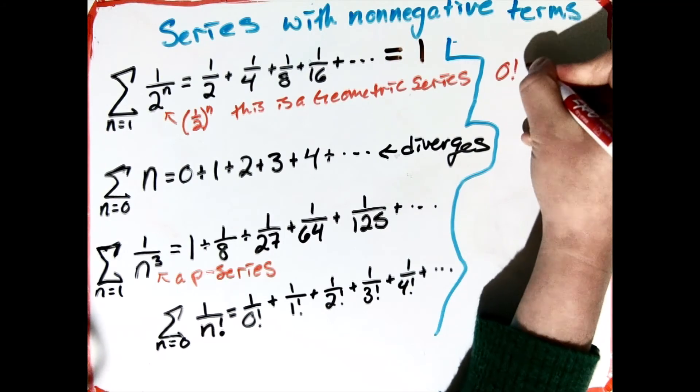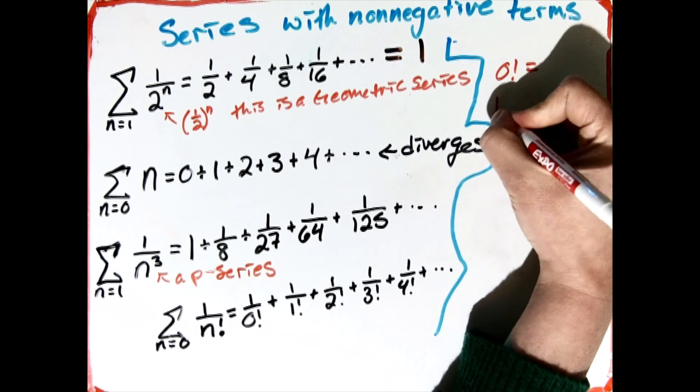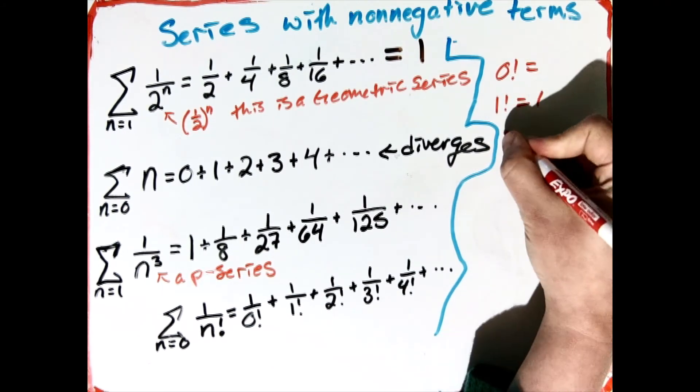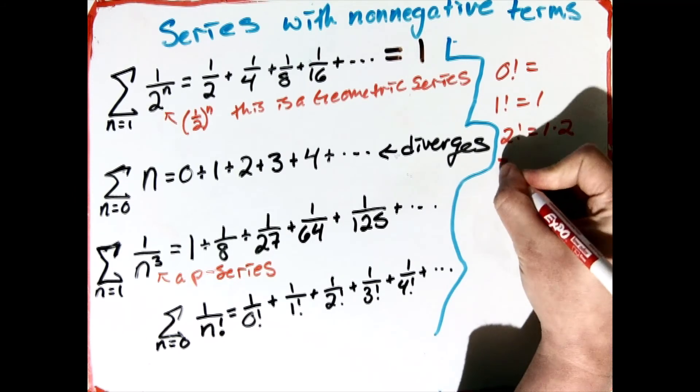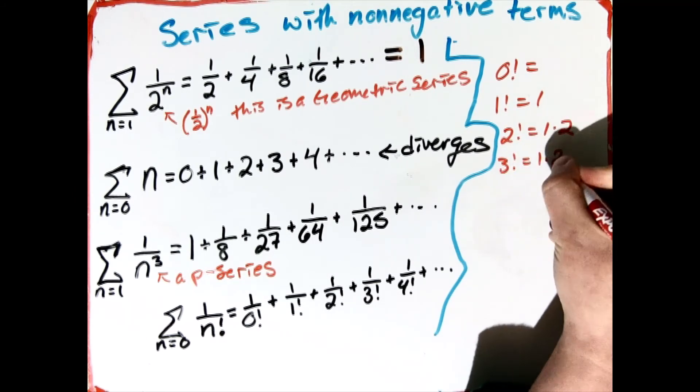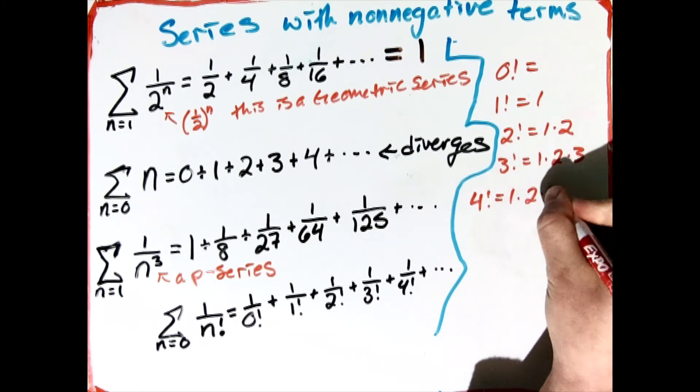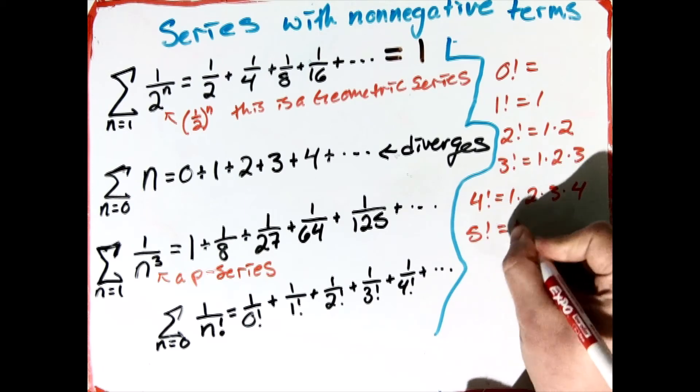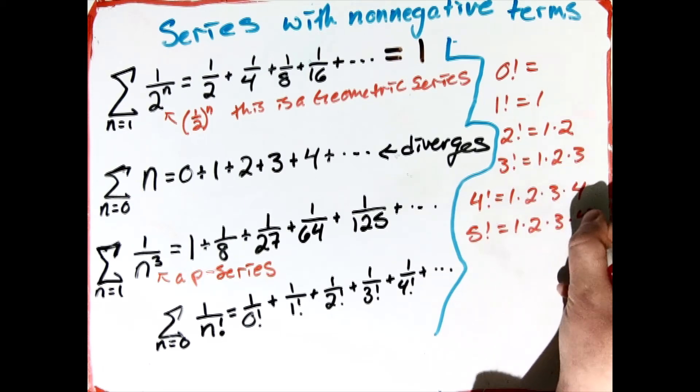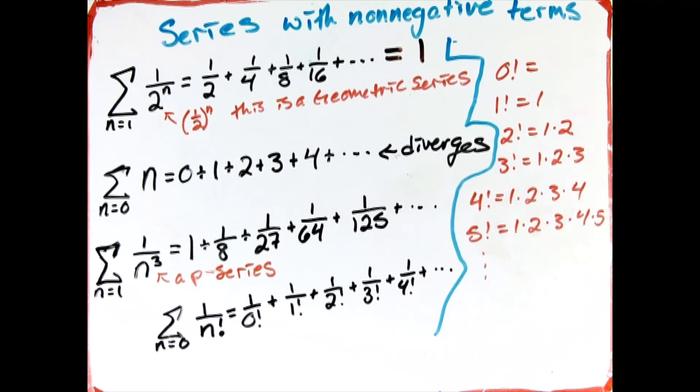So 0 factorial, I'll leave that up in the air for a second. Well 1 factorial is just 1, and 2 factorial is 1 times 2, and 3 factorial is 1 times 2 times 3, and 4 factorial is 1 times 2 times 3 times 4, and 5 factorial is 1 times 2 times 3 times 4 times 5. And you can see that this keeps on going, and it's going to get bigger and bigger really, really quick.